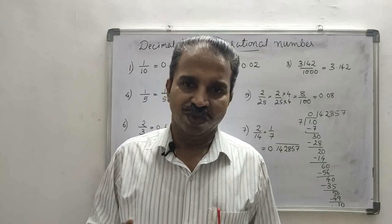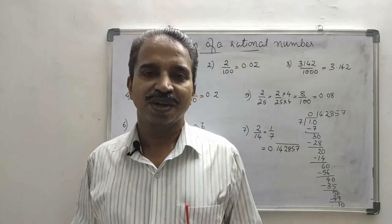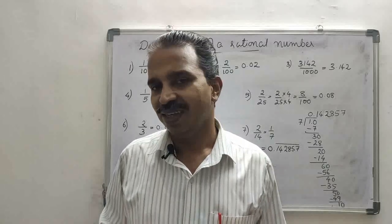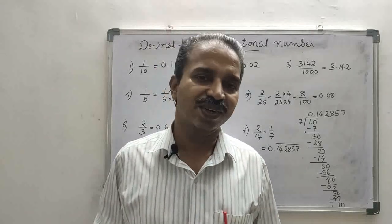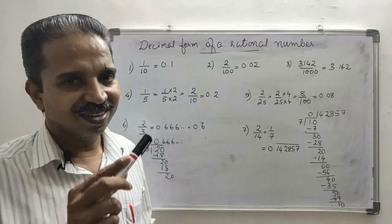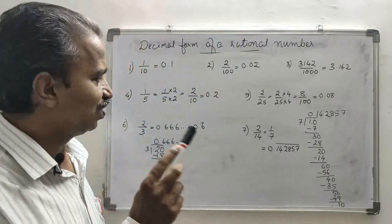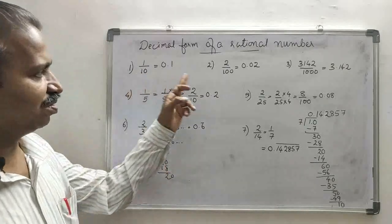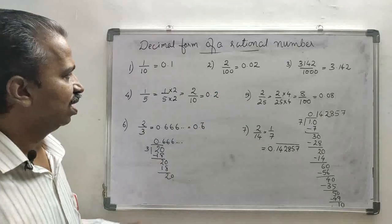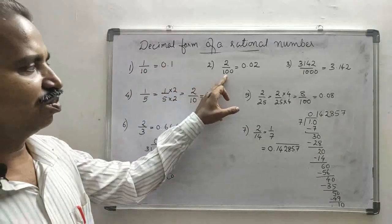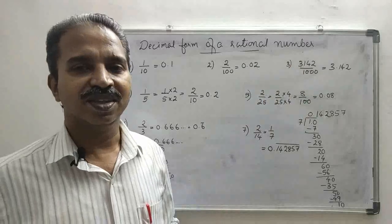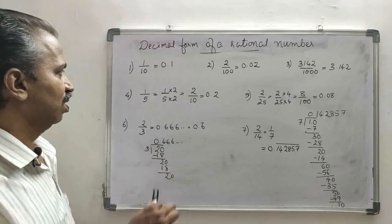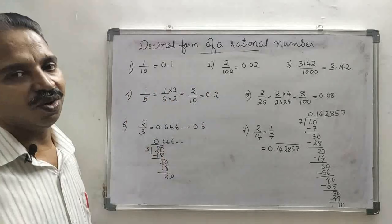Any fraction can be converted into decimal form. In smaller classes, you studied how to convert a rational number or a fraction to decimal form. To save time, I have done seven examples on the board. In the first three examples, the denominator is 10, 100, and 1000 — they are powers of 10 — so the decimal form is written directly.